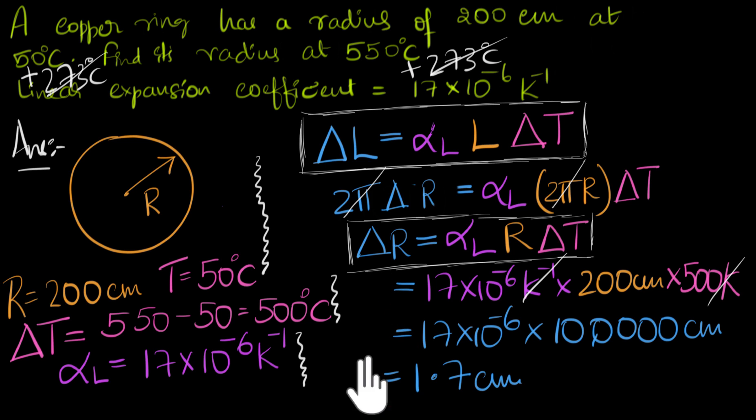All right, so what we have done now is we have calculated the change in radius. But the problem, or the numerical is asking me, what's the final radius? So one last step. Notice that the initial radius was 200 centimeters. Now the radius has increased. Change is positive. Notice the radius has increased by 1.7. So what's the final radius? The final radius is going to be the initial radius 200 plus 1.7. That's going to be 201.7 centimeters. And that is the solution to this problem.